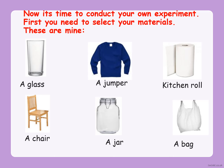Now we are going to have fun in our science lesson today because you are going to be conducting your very own science experiment. But first, you need to select the materials that you want to test. These are my materials: I'm going to be testing a glass, a jumper which is made out of wool, kitchen roll which is made out of tissue, a chair which is made out of wood, a glass jar which is made out of glass, and a bag which is made out of plastic.